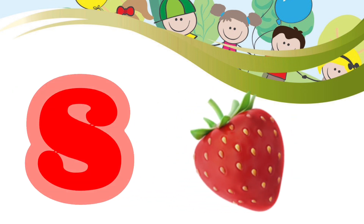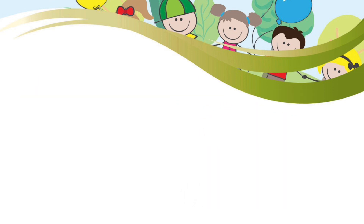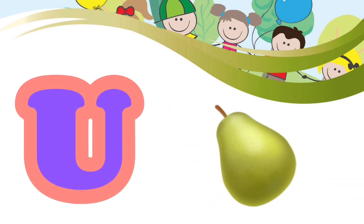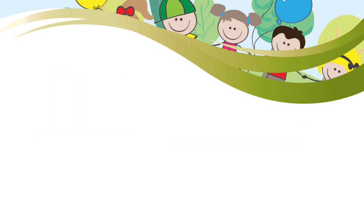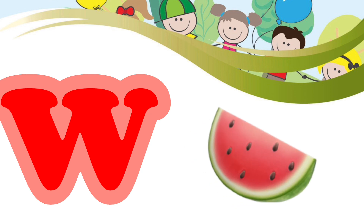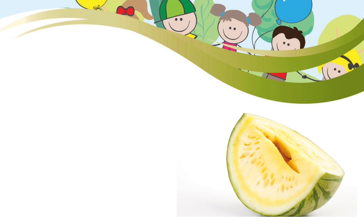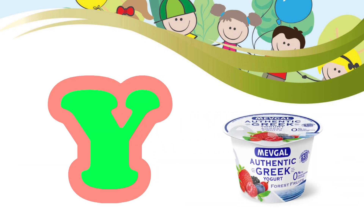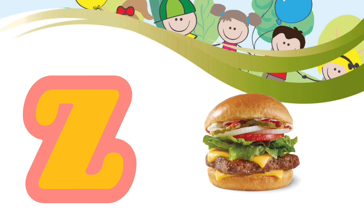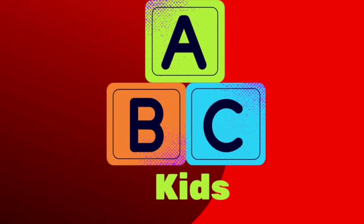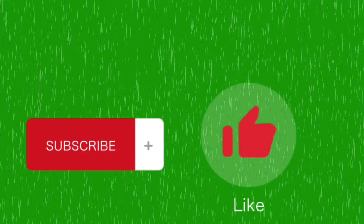S for Strawberry. T for Toast. U for Umbrella Fruit. V for Vegetables. Now I know my ABCs. W for Watermelon. X for Ximenia. Y for Yogurt. Z for Zinger Burger.